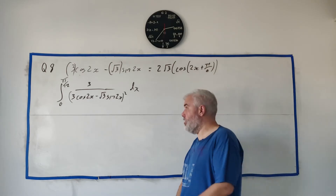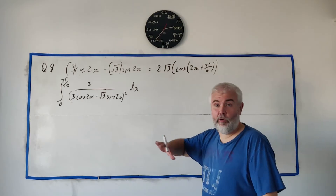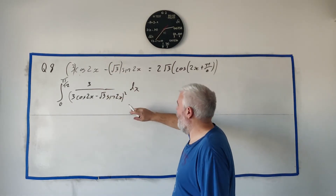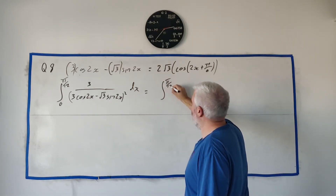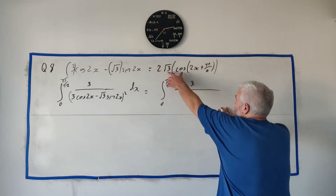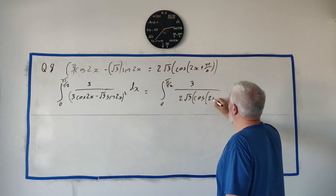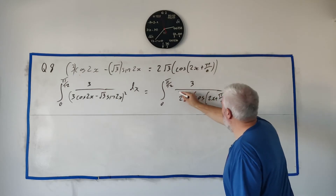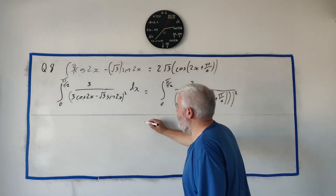In part B they give us a very scary looking integral, but we should notice very quickly that the denominator is the same expression from part A. So we can quite easily rewrite the integral from 0 to π/12 with 3 on top and the denominator replaced by [2√3·cosine(2x + π/6)] squared. And that we can actually handle quite easily.